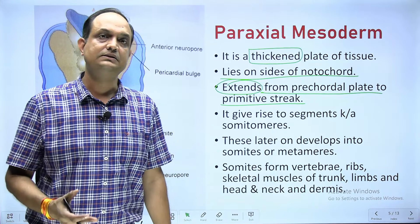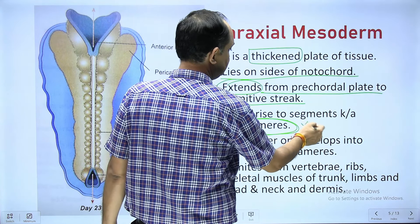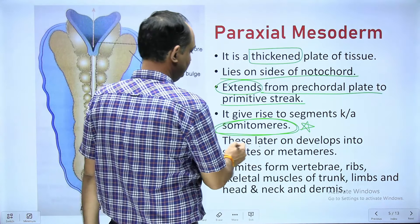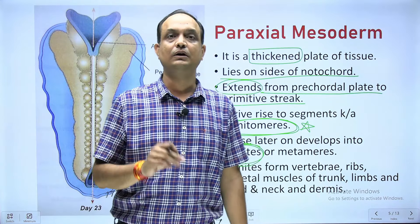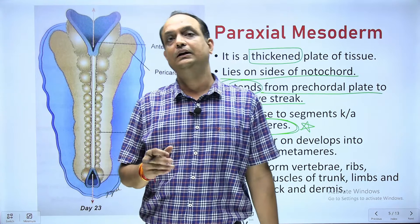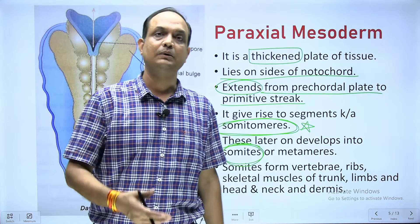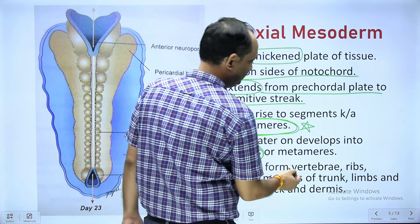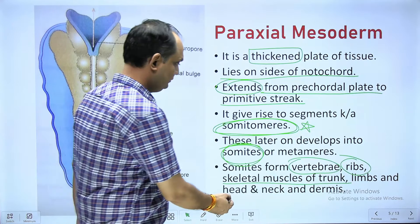The para axial mesoderm undergoes condensation and segmentation to form special structures known as somatomeres. These somatomeres later divide to form somites, which are very useful structures appearing as surface elevations on both sides of the midline in the developing embryo. These somites later divide into sclerotome, dermatome, and myotome.